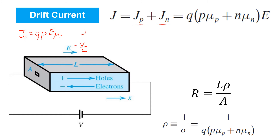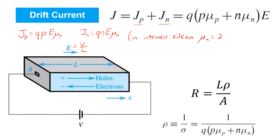Similarly, we can write an expression for the drift current density that arises due to electrons. Again, we've got the charge density due to electrons Q times N times the applied electric field E times the carrier mobility for electrons μN. The carrier mobility for electrons and holes are not the same. For example, in intrinsic silicon, the carrier mobility for electrons is significantly higher than that of holes — about two and a half times higher.